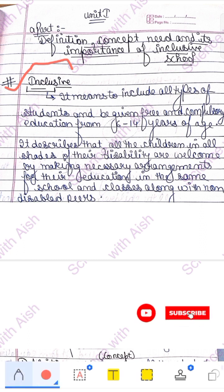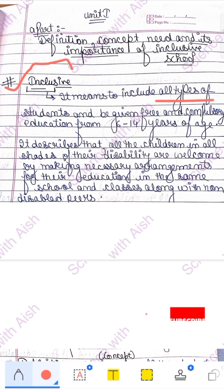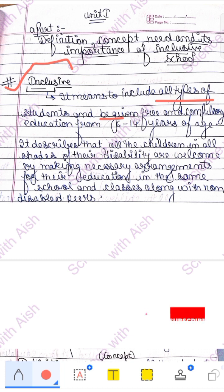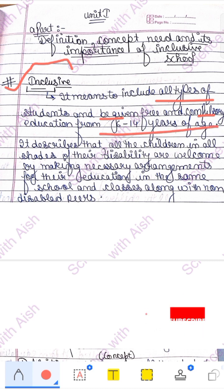I hope that you have understood. Today we will cover definitions, concepts, and the nature of inclusive education. So let's start. Inclusive means to include all types of students — whether a normal child or disabled. We need to include everyone in one school. We need to study free and compulsory education from 6 to 14 years of age.